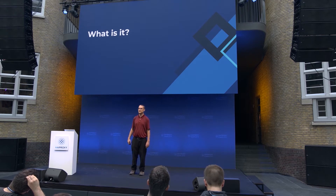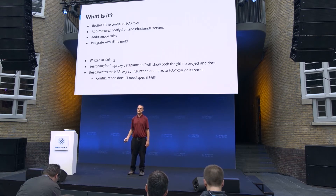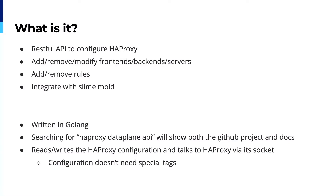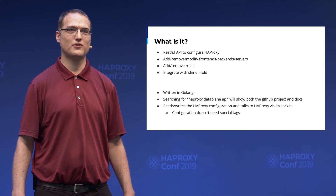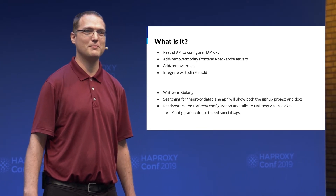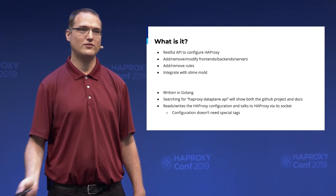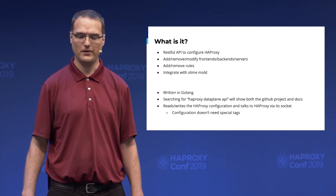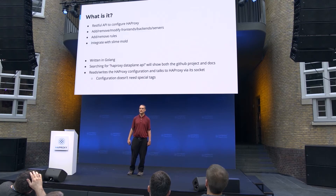So what exactly is the Data Plane API? It's basically a RESTful API to configure HAProxy. Any configuration that you can write by hand — be it SSL cipher bind lines or rate limiting — can be done via the Data Plane API. It integrates well with AI-based config generation; if your generated configuration is invalid, the API will not allow it to actually deploy the broken configuration and will instead wait for a fixed one. It's written in Go, and you can find the GitHub project and documentation by searching for 'HAProxy Data Plane API'.